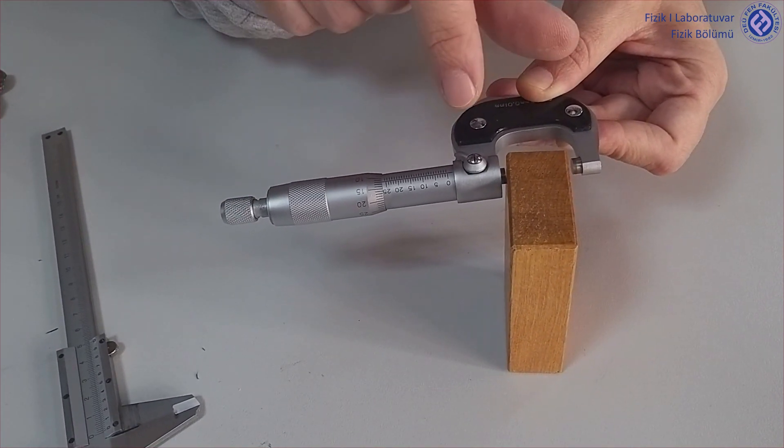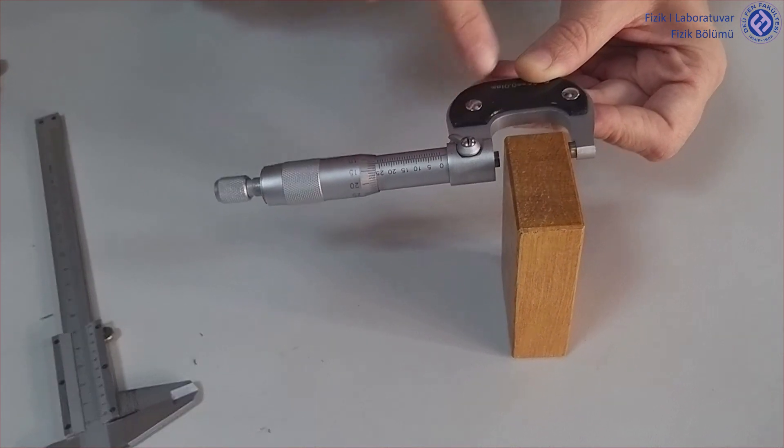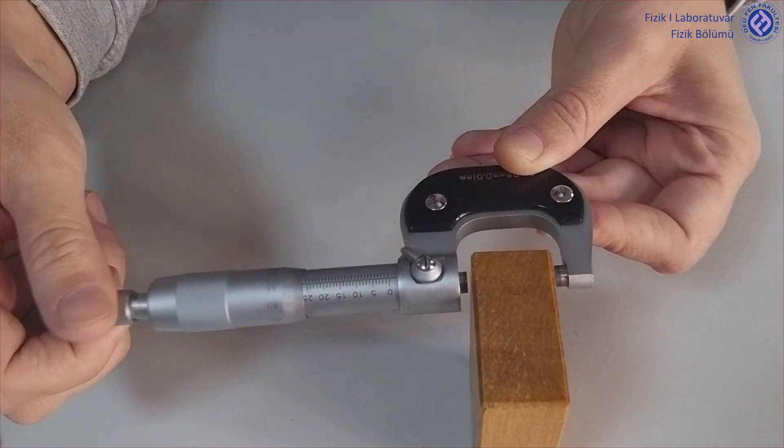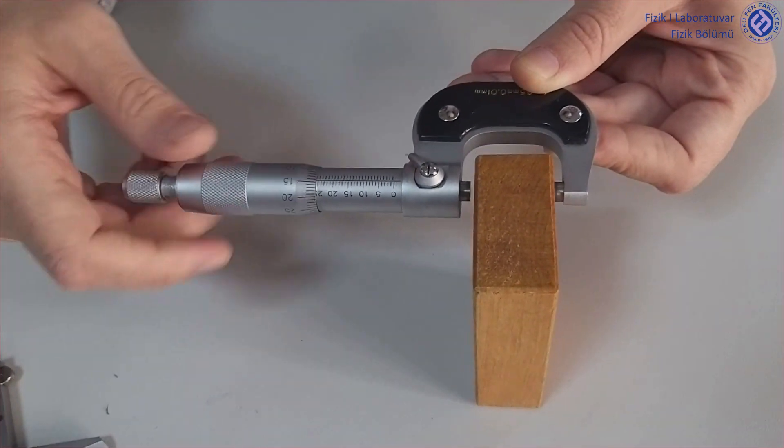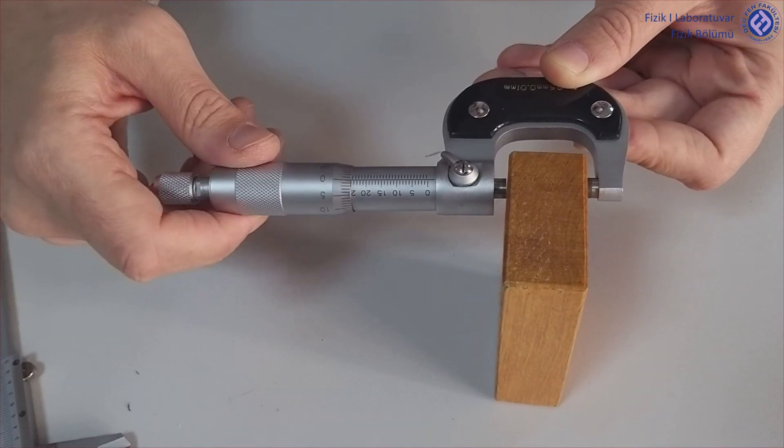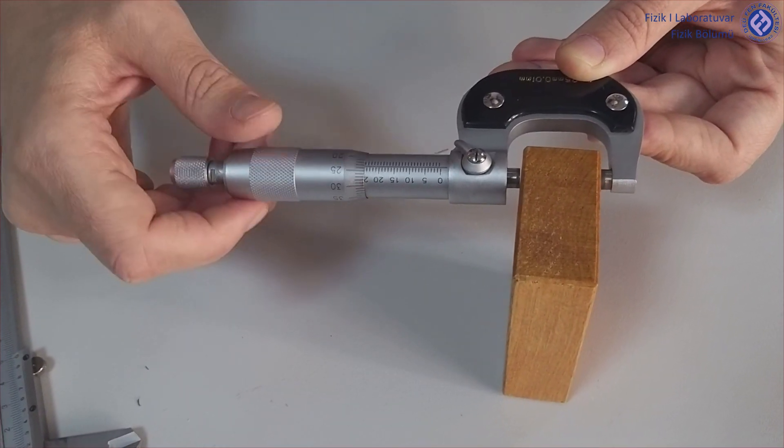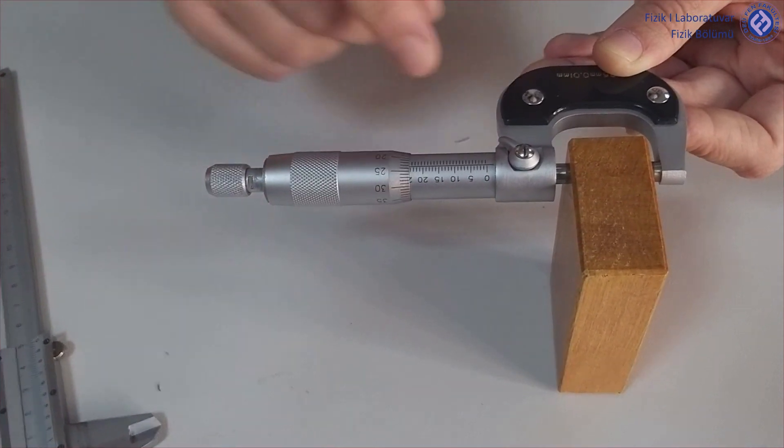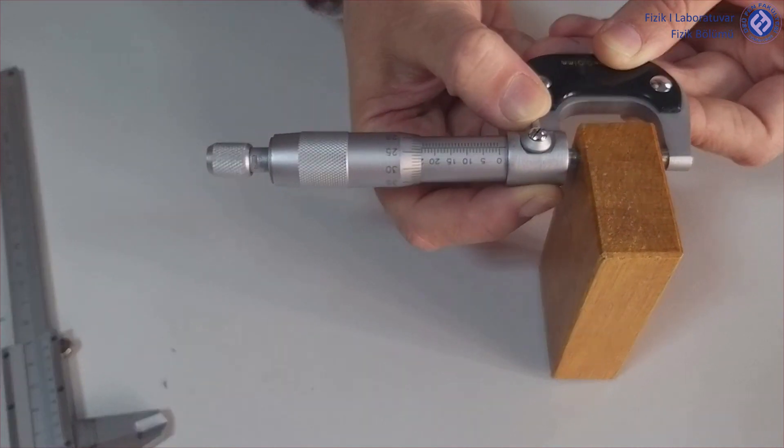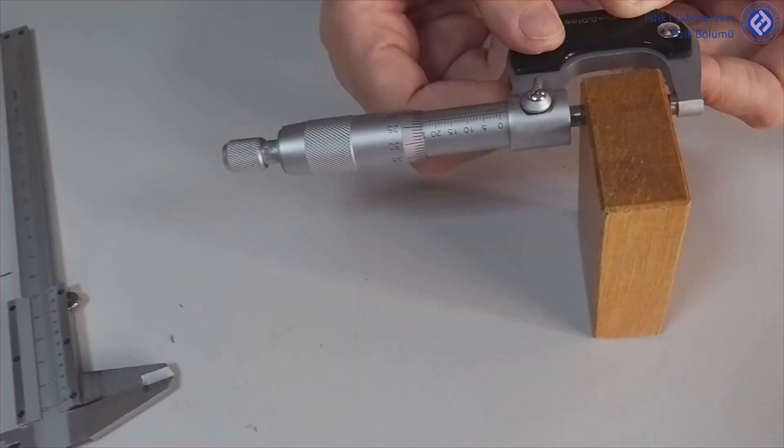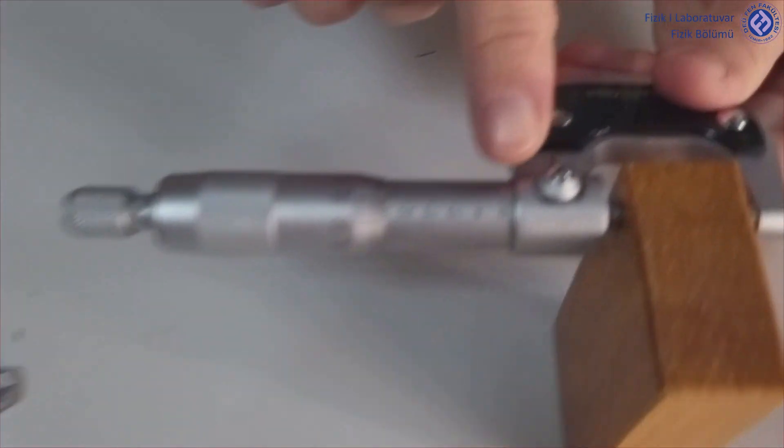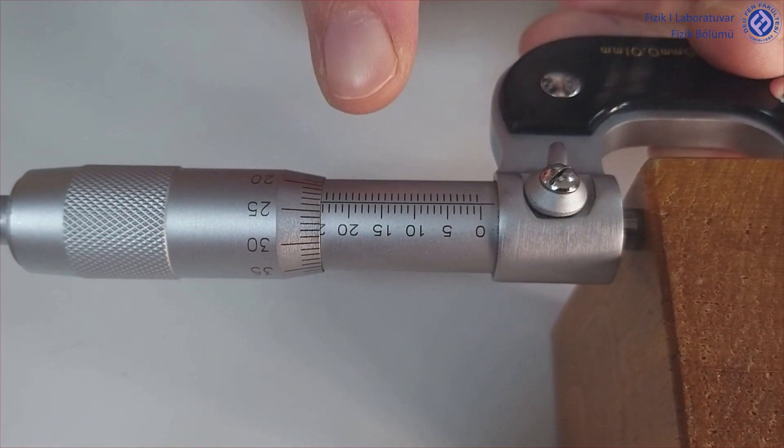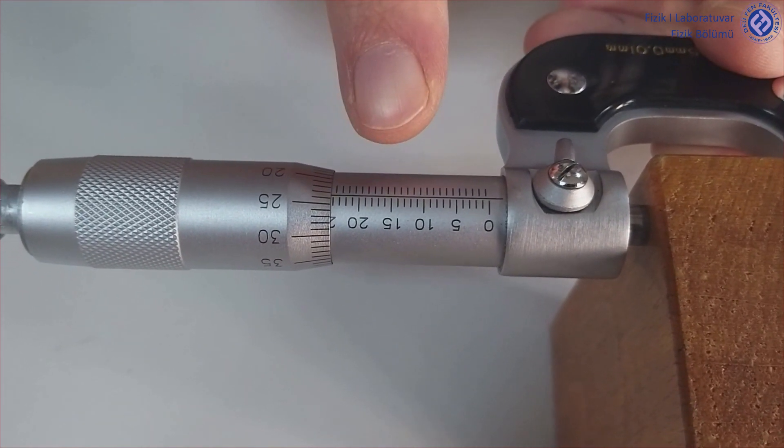The object is placed between the micrometer jaws. After placing on the main scale, the line that best overlapped with the main scale baseline on the rotating micrometer scale is checked.